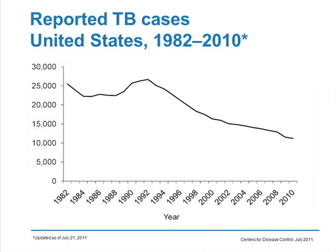The epidemiology of TB in the United States — we are at historic all-time lows. In 2010, just over 11,000 cases were reported. In the late 1980s, we had what was called the resurgence, a brief uptick in cases largely due to defunding of our public health infrastructure. We refunded and hustled to contain that transmission, and since the early 90s there has been a steady decline.